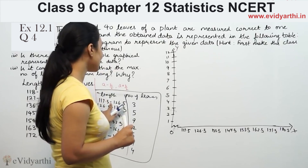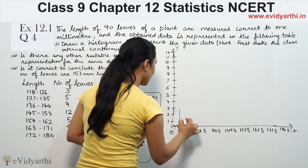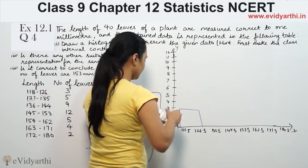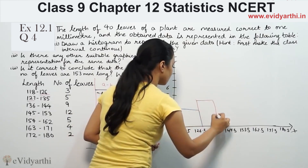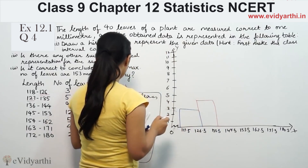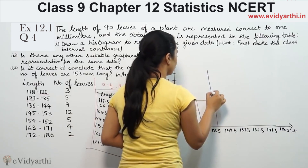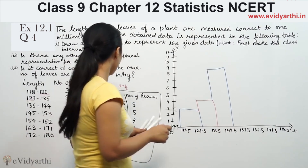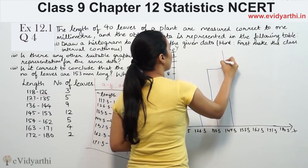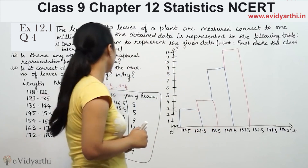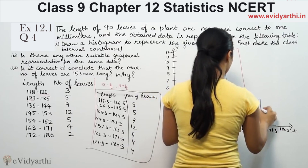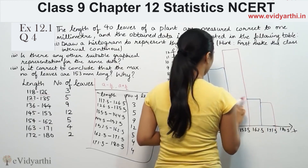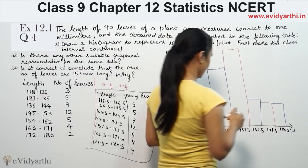The first bar from 117.5 to 126.5 has frequency 3. The next interval 126.5 to 135.5 has frequency 5. Then 135.5 to 144.5 has frequency 9, and the tallest bar is 144.5 to 153.5 with frequency 12. Then 5, next is 4, and the last is also 4. This completes the histogram.